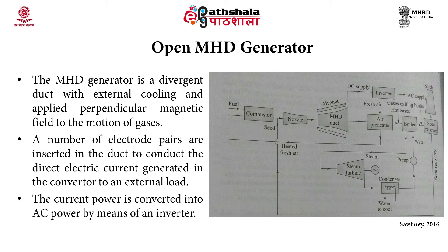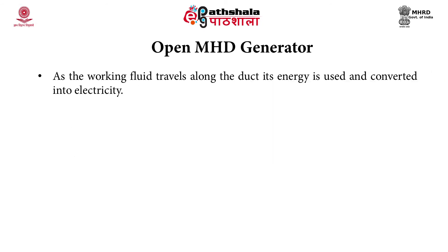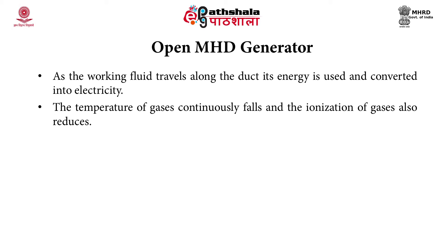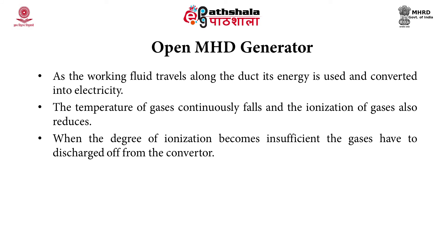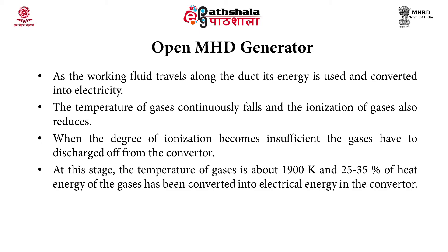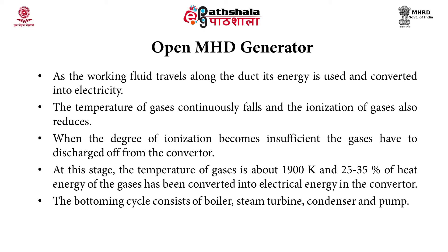The direct current power is converted into AC power by means of an inverter. As the working fluid travels along the duct, its energy is used and converted into electricity. The temperature of gases continuously falls and ionization reduces. When the degree of ionization becomes insufficient, gases are discharged from the converter. At this stage, the temperature is about 1900 Kelvin and 25–35% of the heat energy has been converted into electrical energy. The gases are then used in a preheater to heat fresh air for the combustor and in a waste heat boiler to generate steam.